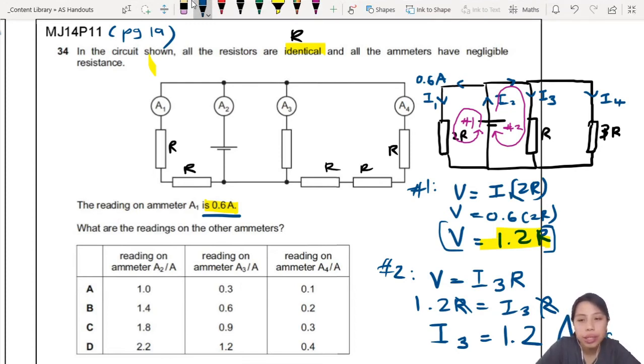Very nice, that was a trick. We didn't know V but in the end the R cancels out. I3 or A3 is 1.2, wow so easy already, straight away find the answer.